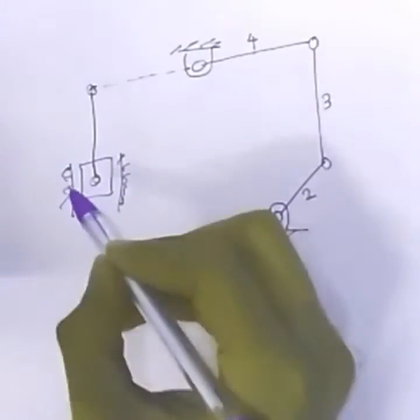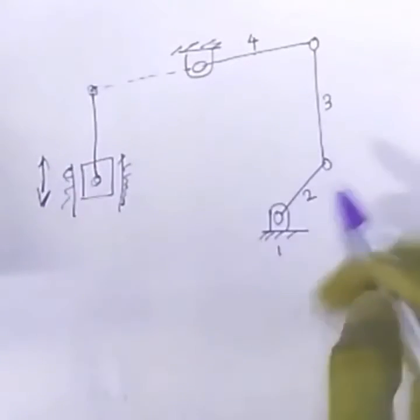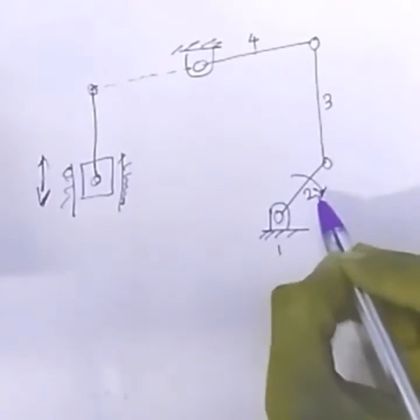What is done is the rotational motion of this crank is converted into sliding motion of this piston. This is rotating like this and this is converted into sliding motion of the piston.